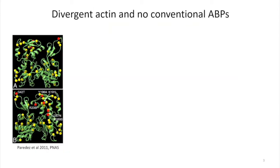Giardia is also a really, really divergent eukaryote. It has the most divergent actin of any eukaryote that you can manipulate in the lab — actin is only 58% identical, on average, to other actins. None of the common probes work: phalloidin, latrunculin, cytochalasin — none of those things work. We've highlighted all the non-conservative substitutions on the actin monomer, and these red substitutions are at filament contact points, where even a single mutation in yeast actin would have a profound impact on filament dynamics. Normally actin sequences are really constrained because there's a whole host of proteins that have to interact with it.